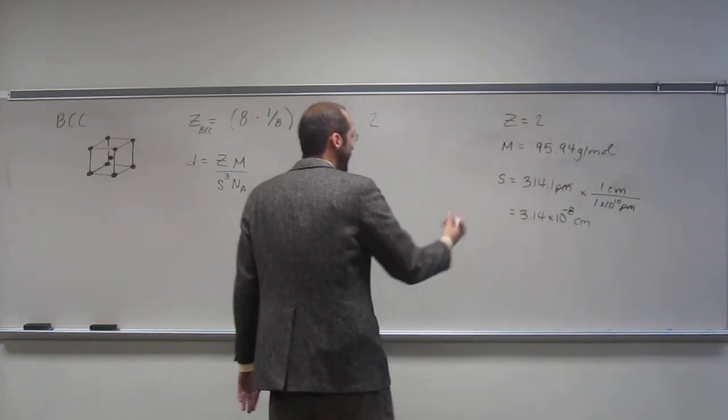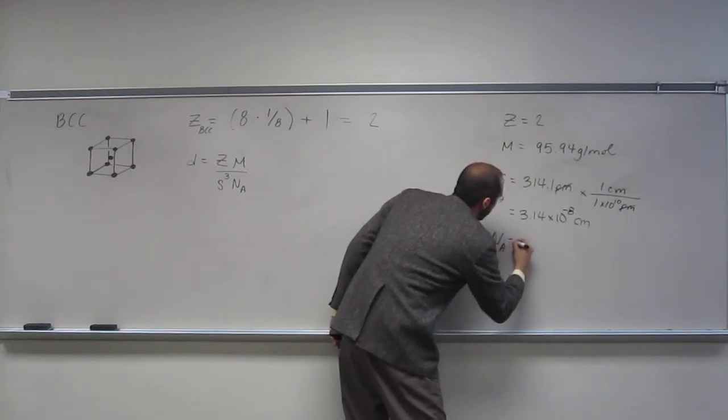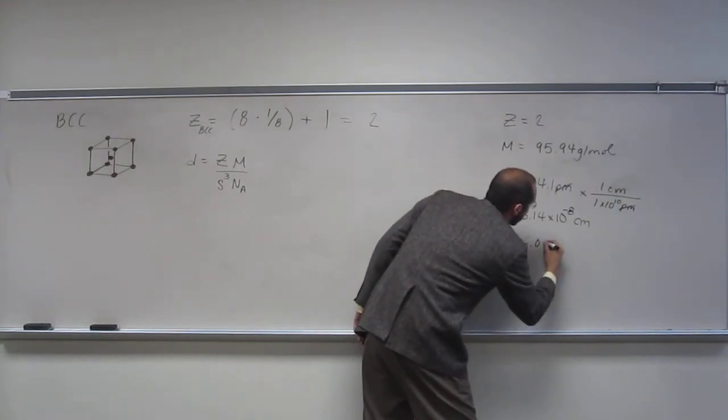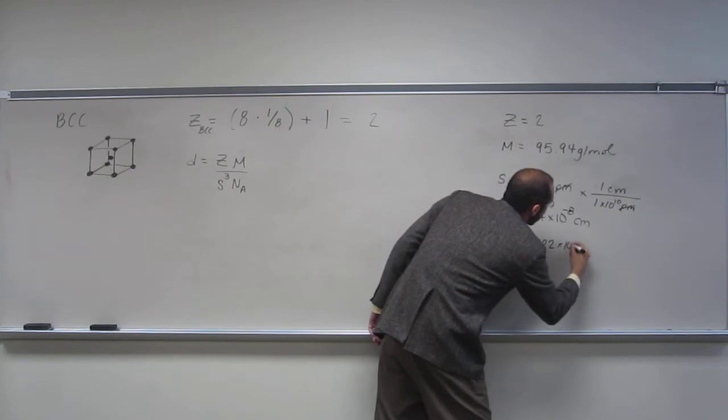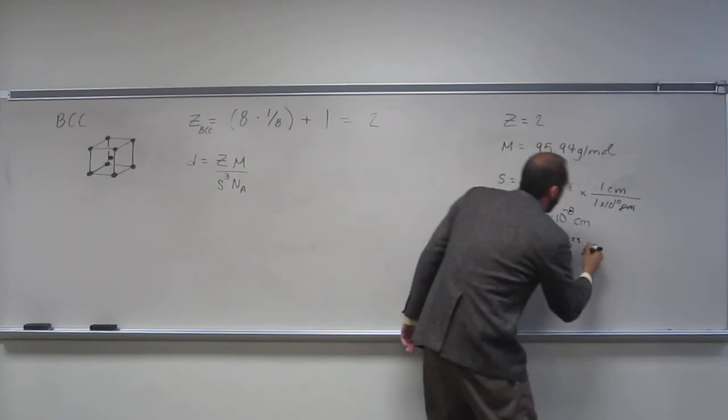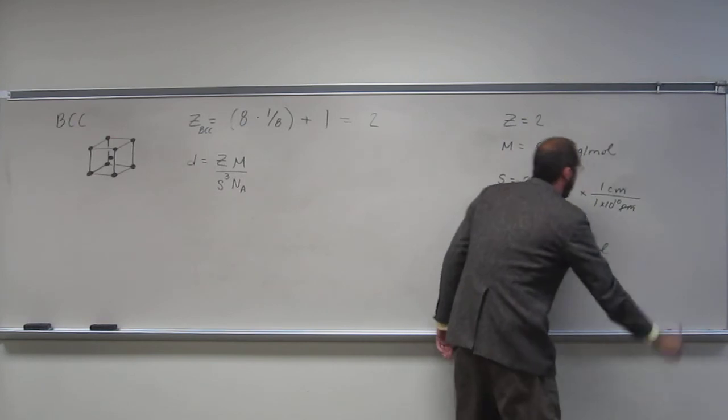And then Avogadro's number, of course, that'll probably be given to you. But 6.022 times 10 to the 23rd, anything, in this case, atoms per mole.